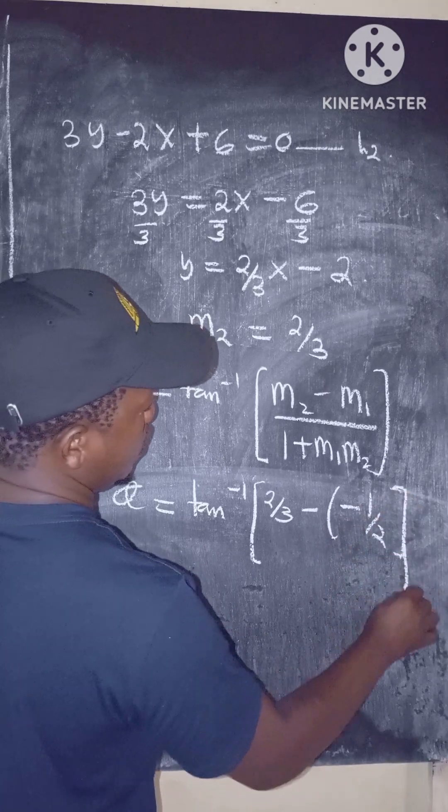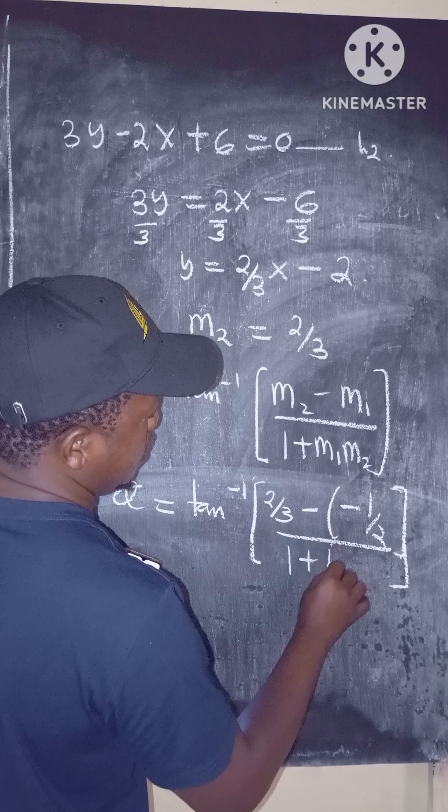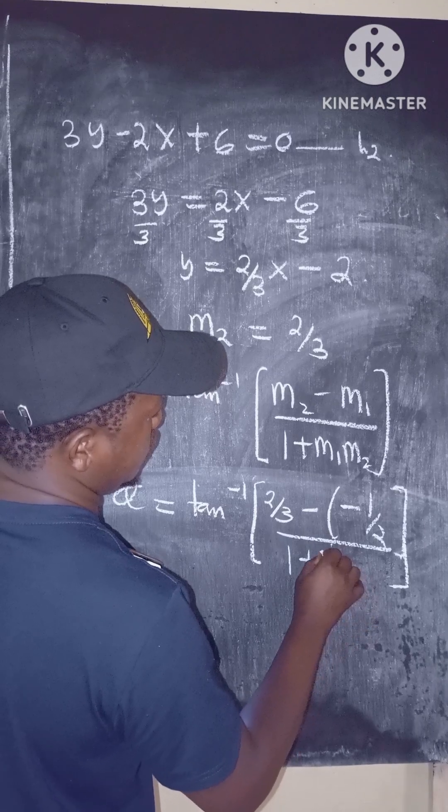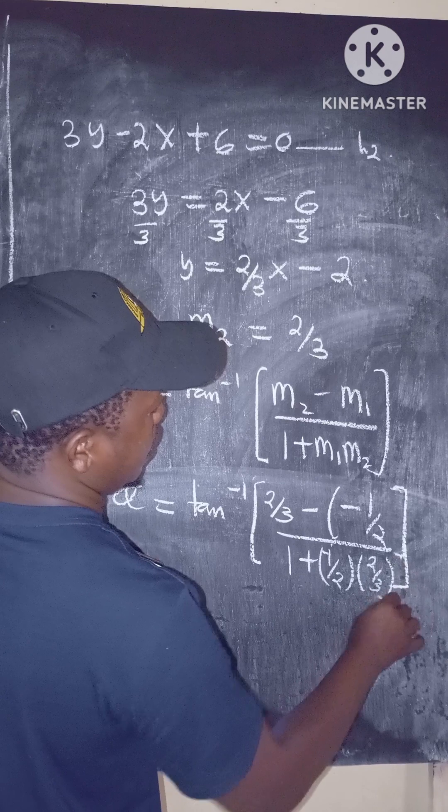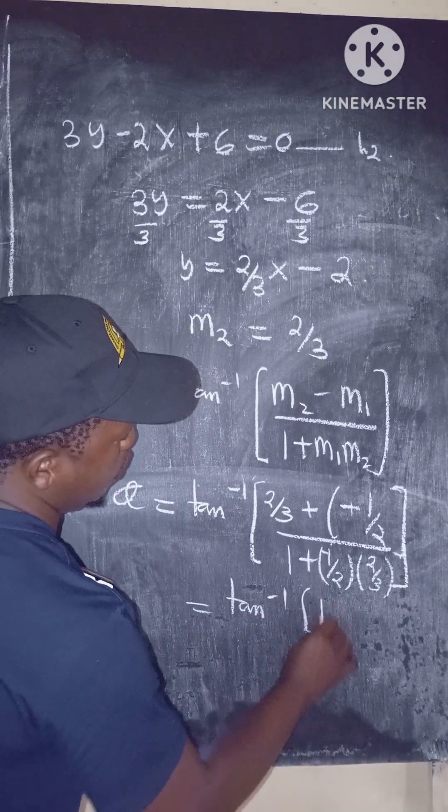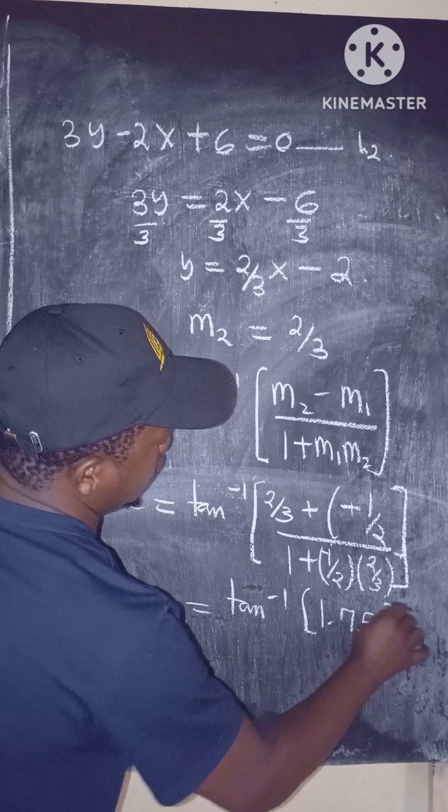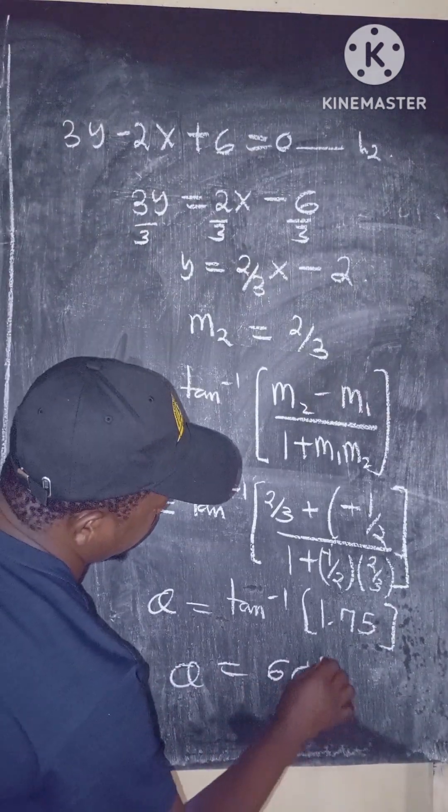over 1 plus negative one-half times 2 over 3. Taking the inverse tangent gives 1.75, so theta equals 60 degrees.